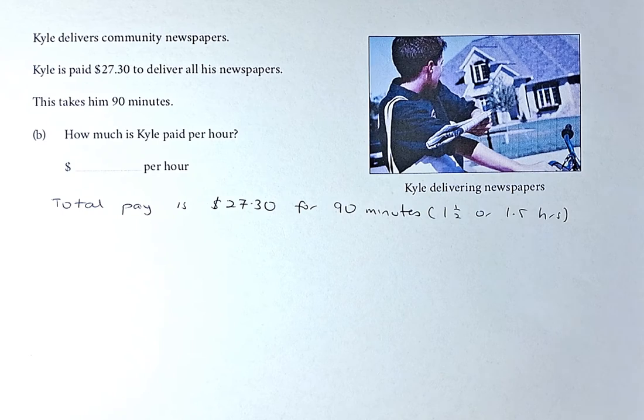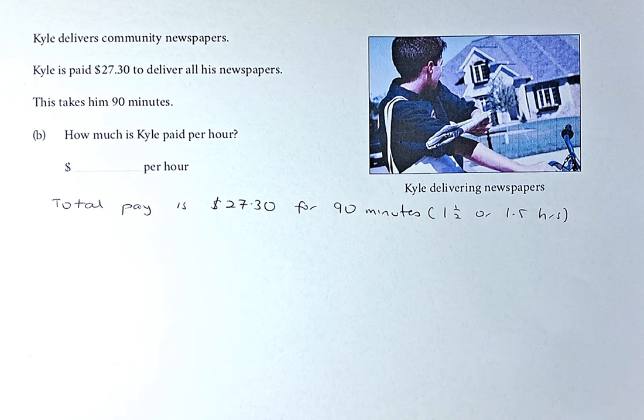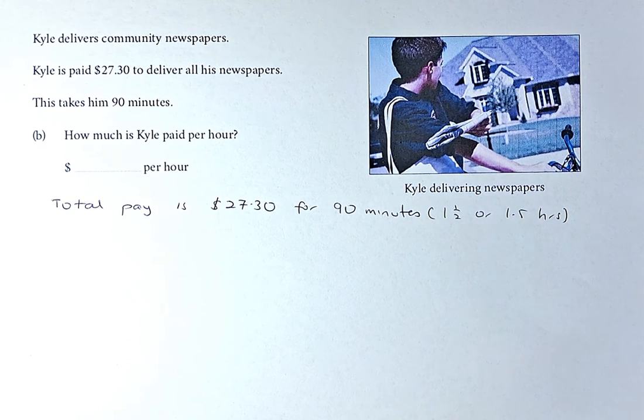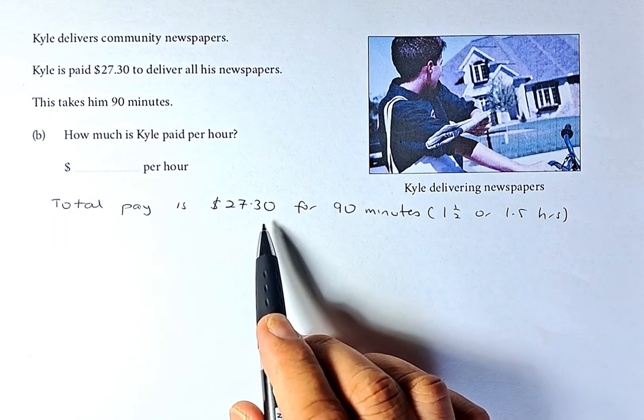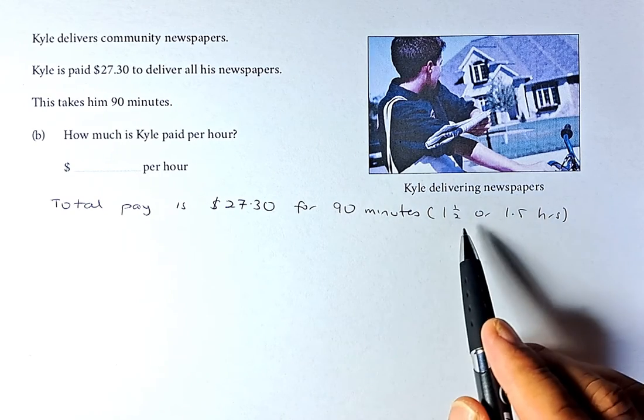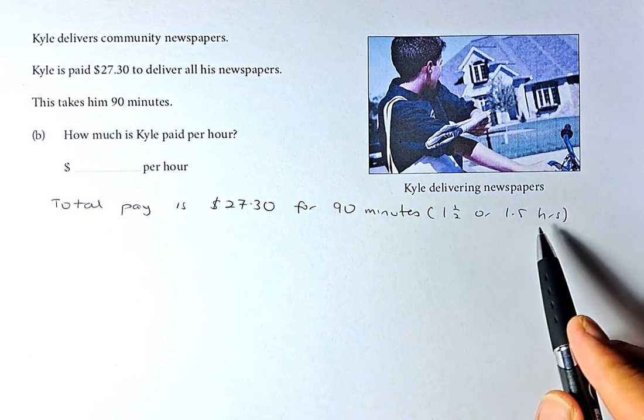Kyle delivers community newspapers. He is paid an amount of $27.30 to deliver all his newspapers. This will take him 90 minutes. How much is Kyle paid per hour?